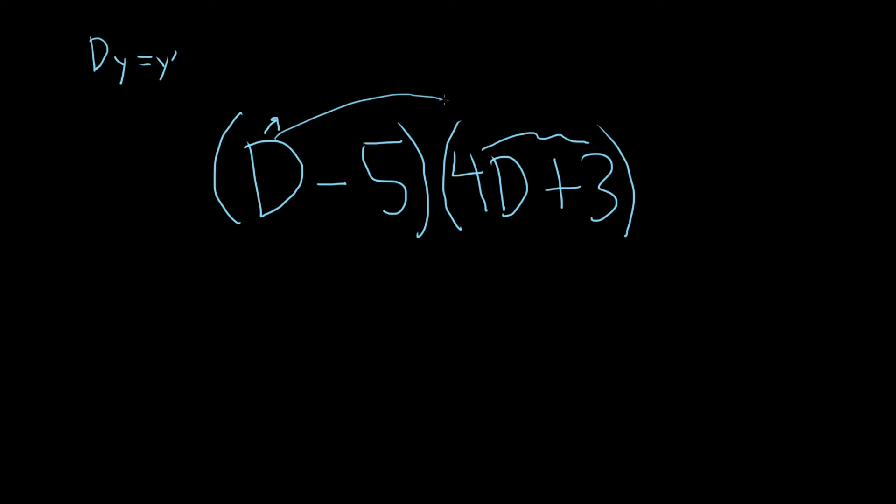So when you apply it to 4D, it's going to give you 4D squared. That means take the derivative twice. And then plus 3D.